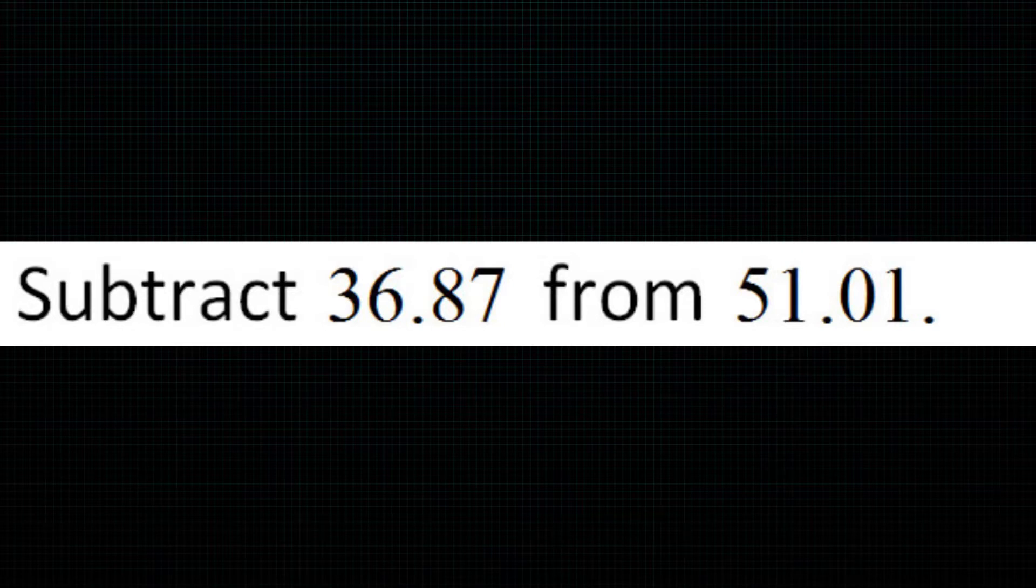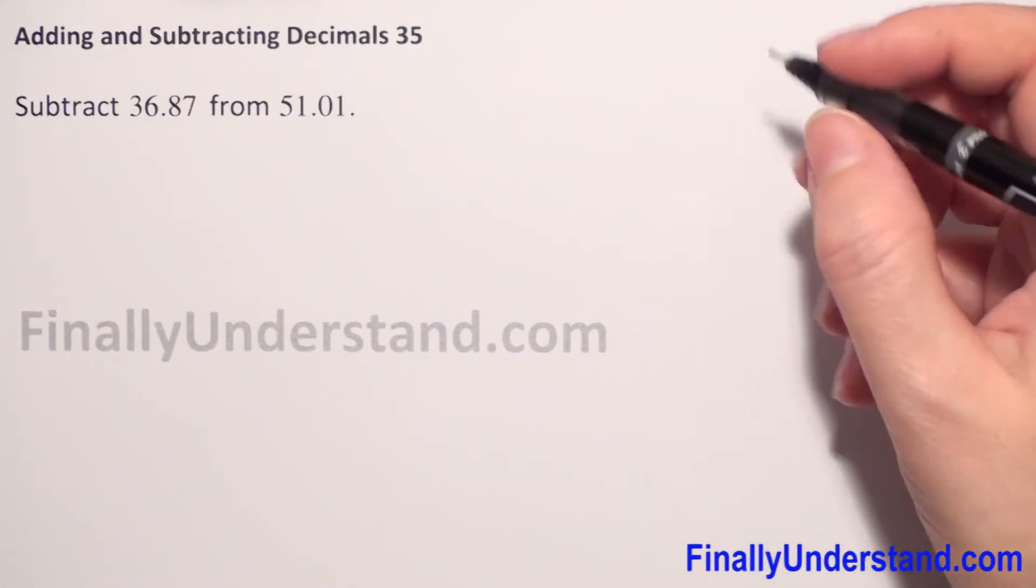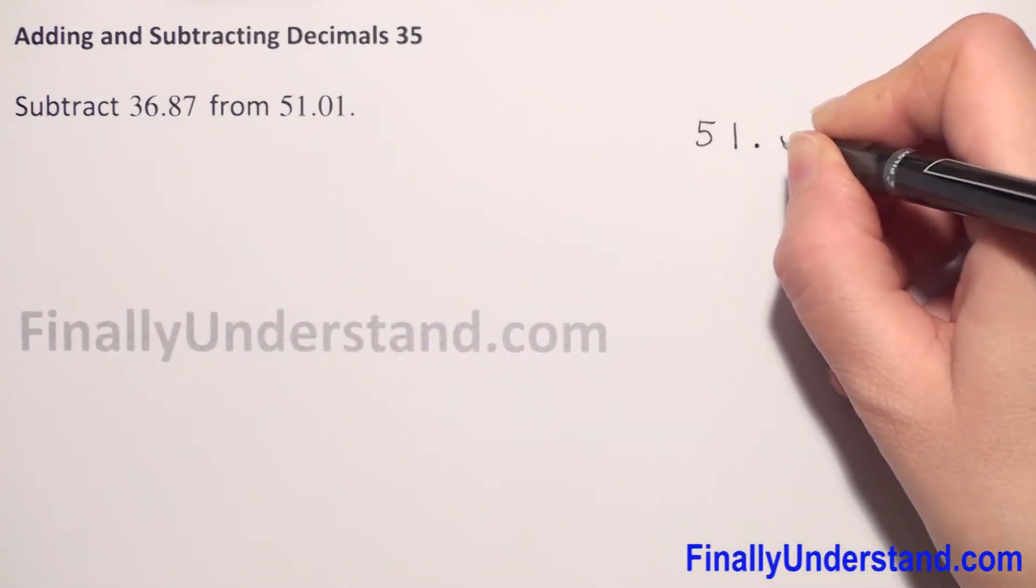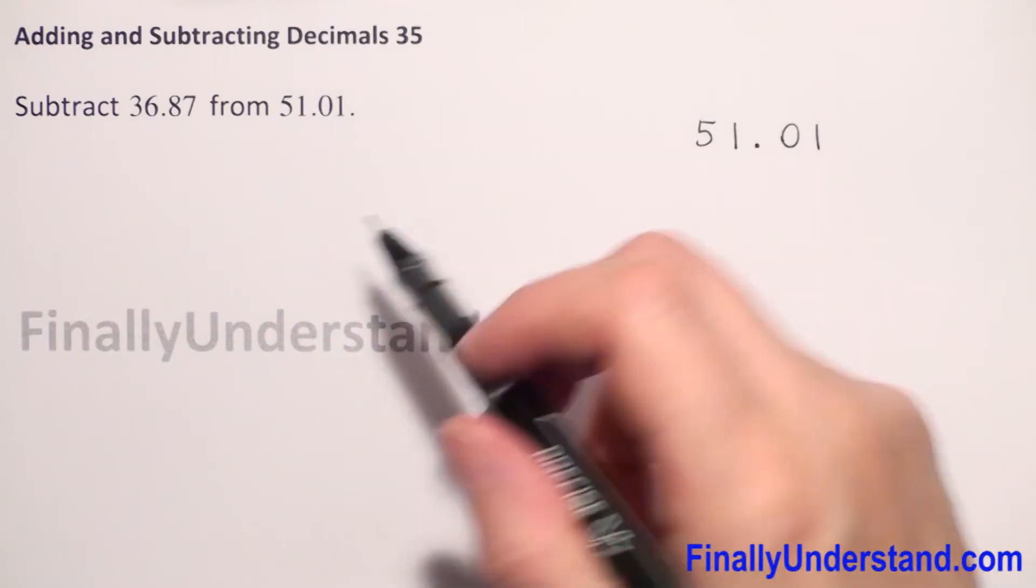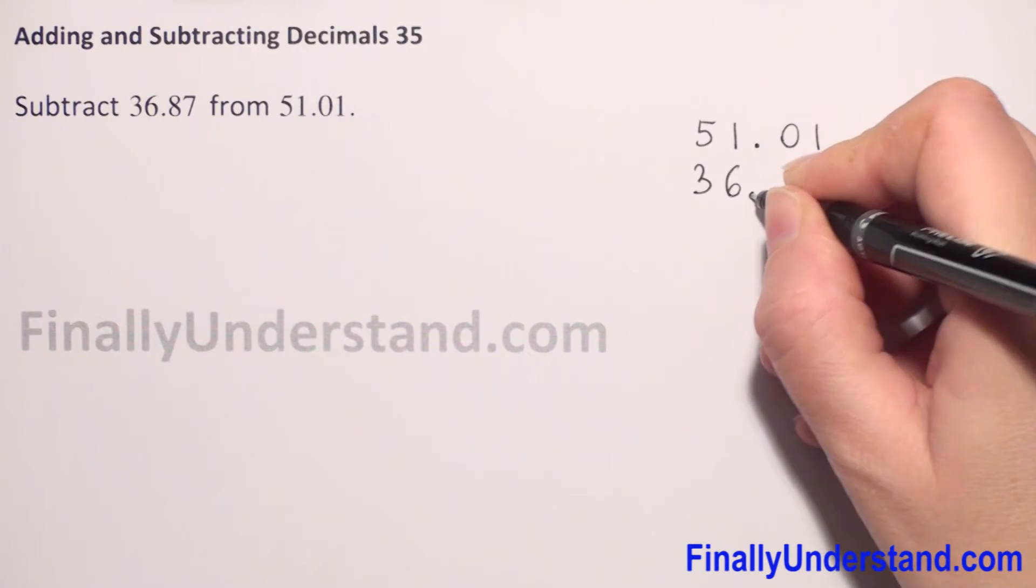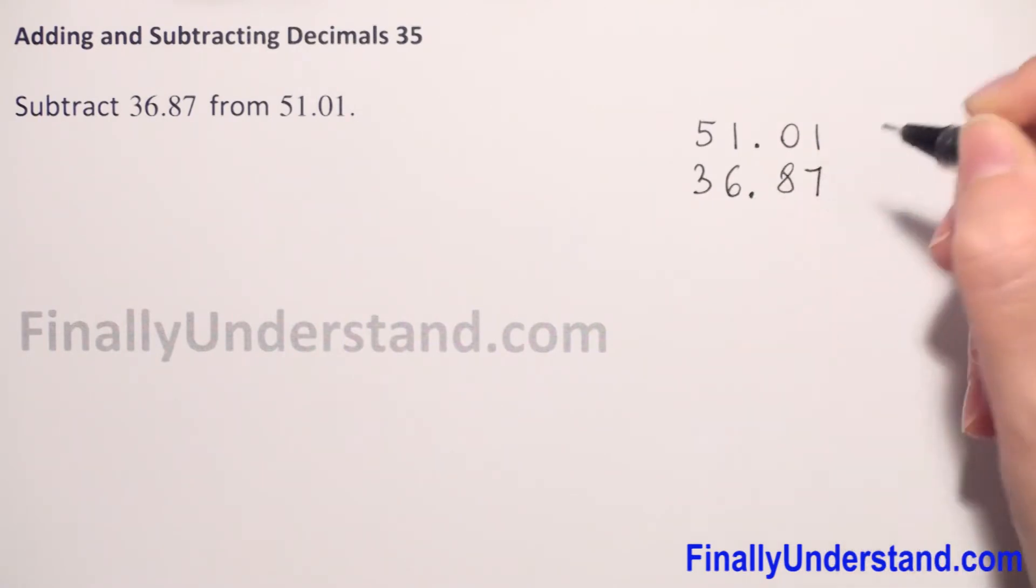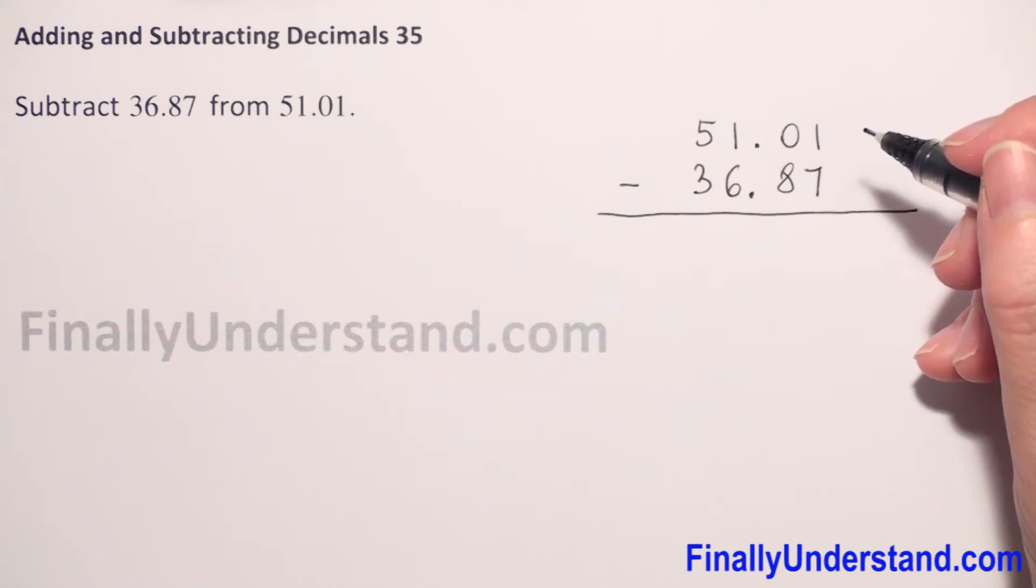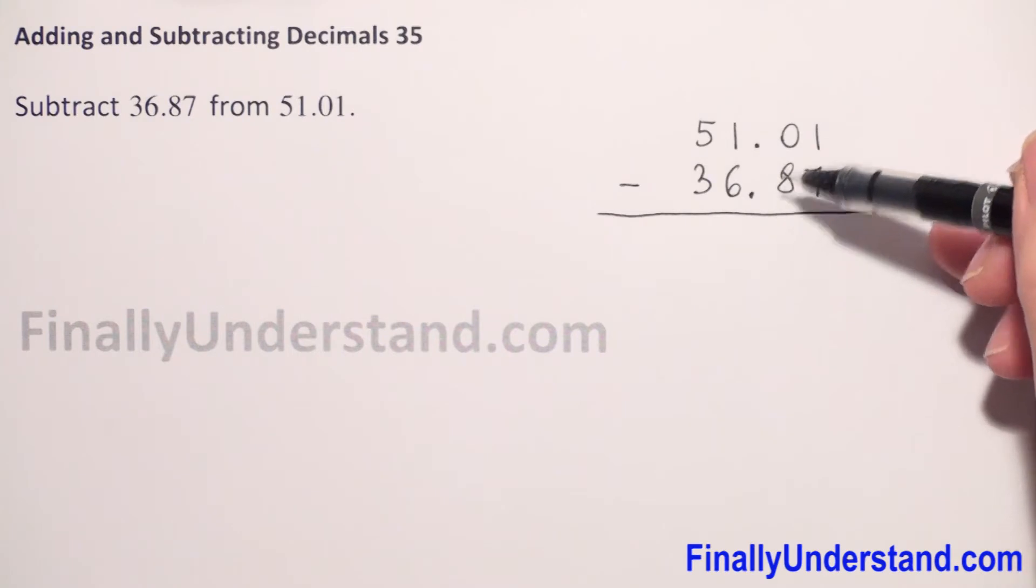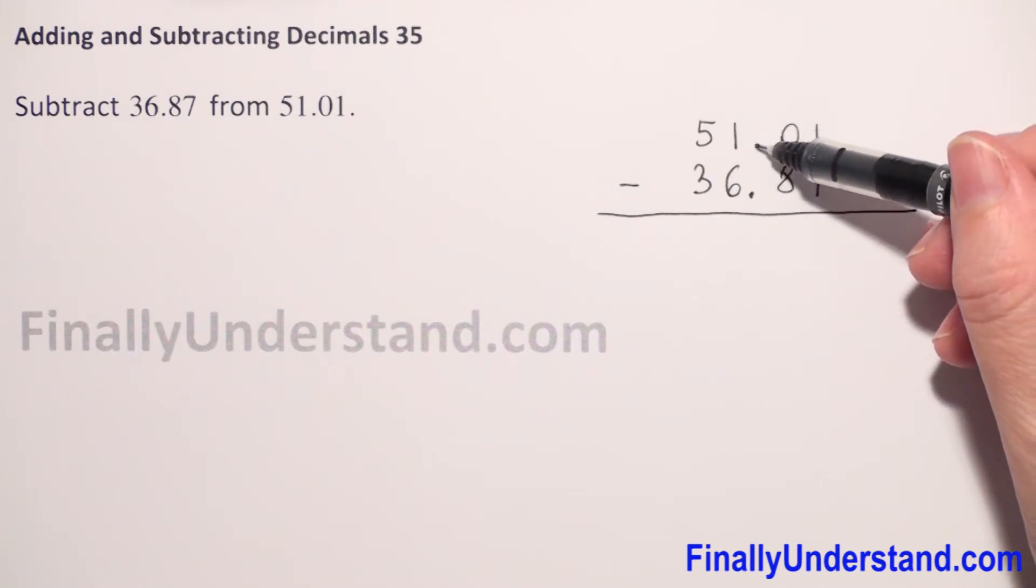We have to subtract 36.87 from 51.01. On the top we have 51.01. From the greater number we subtract the smaller: 36.87. How do we subtract decimal numbers? First, we write them in vertical columns, aligning the decimal points.